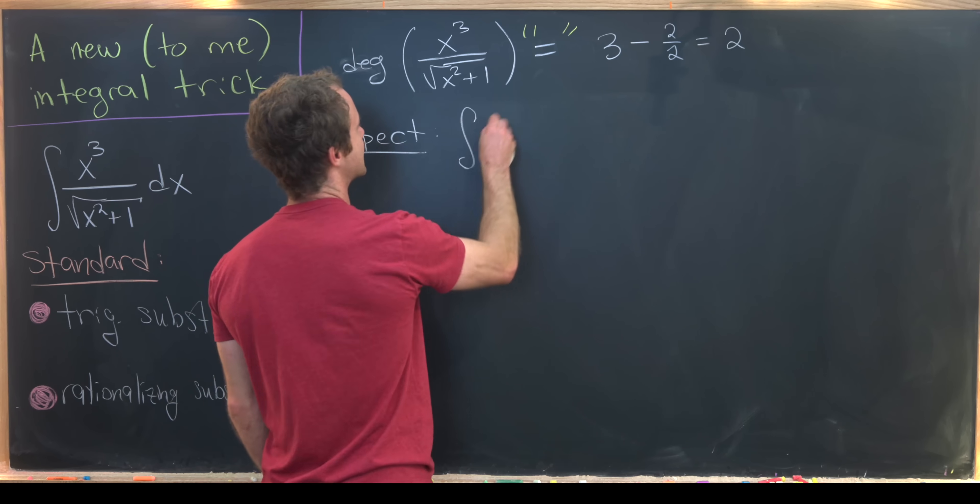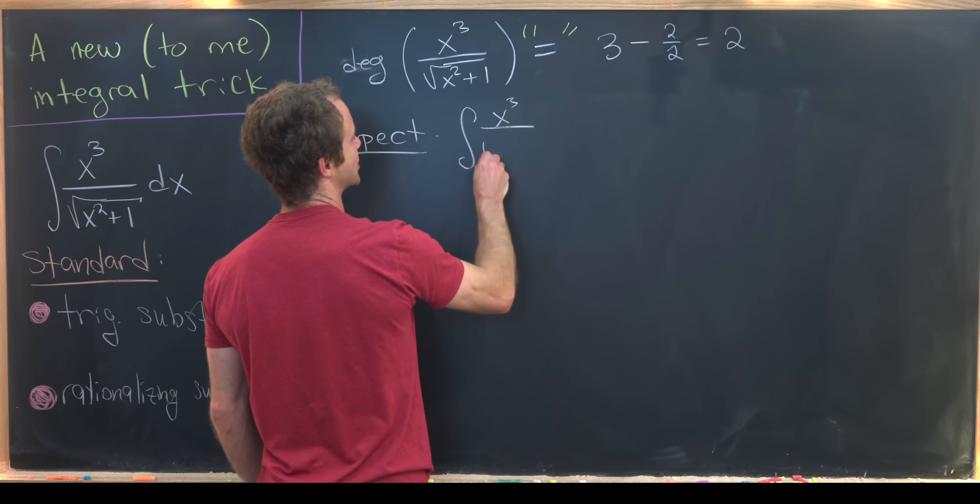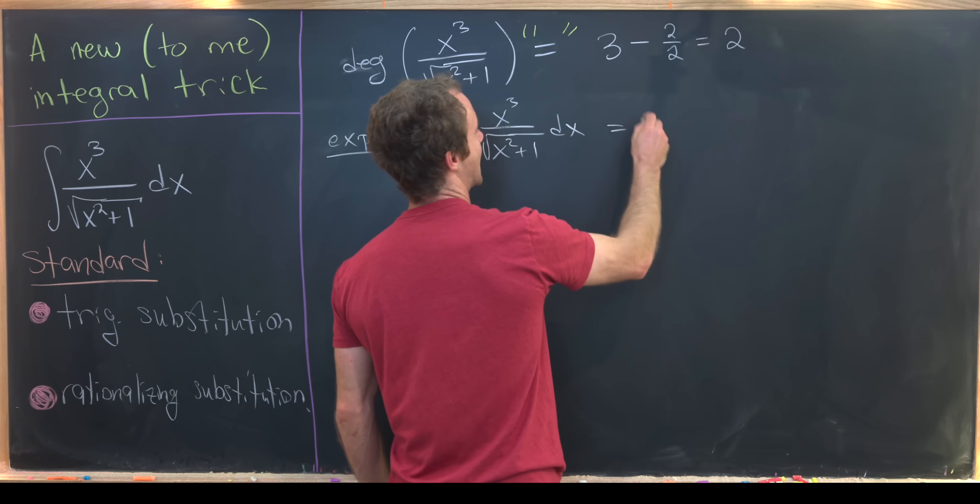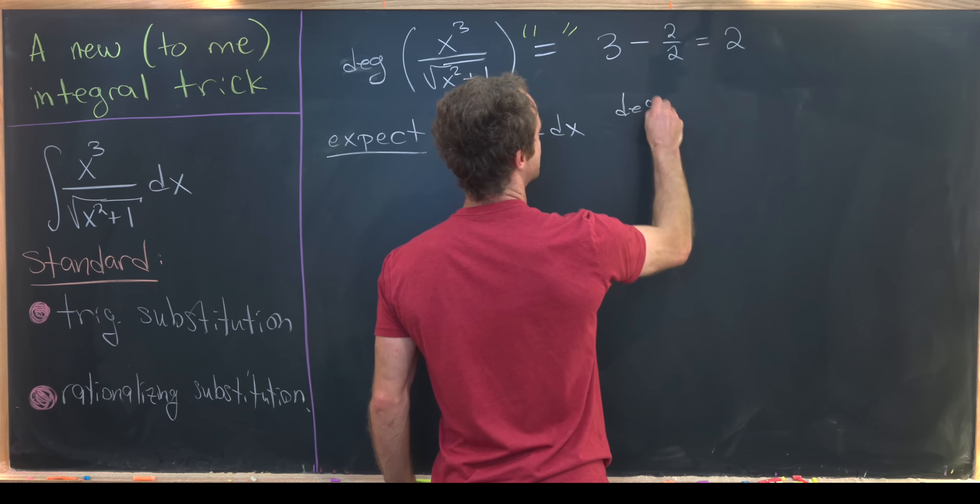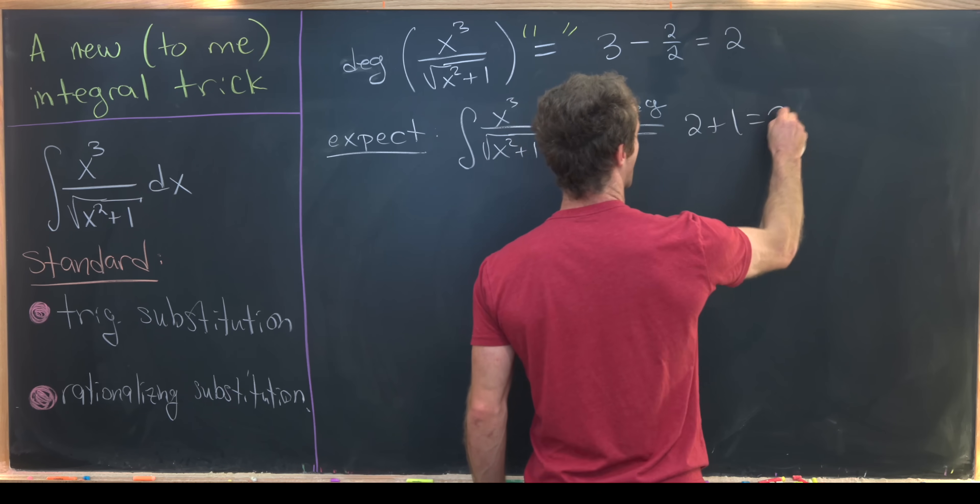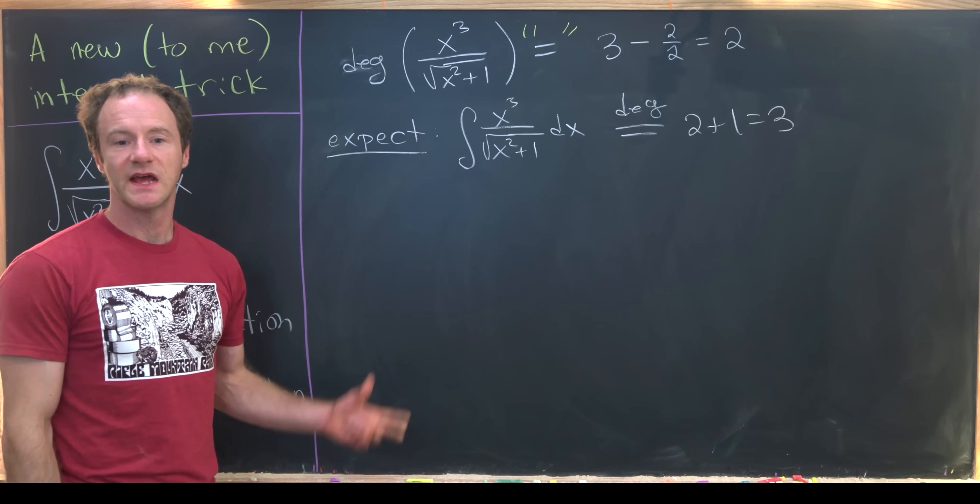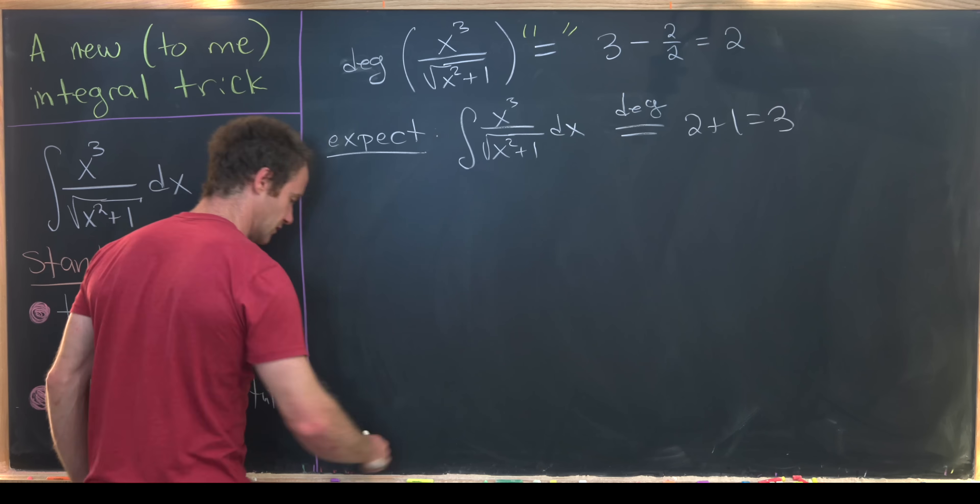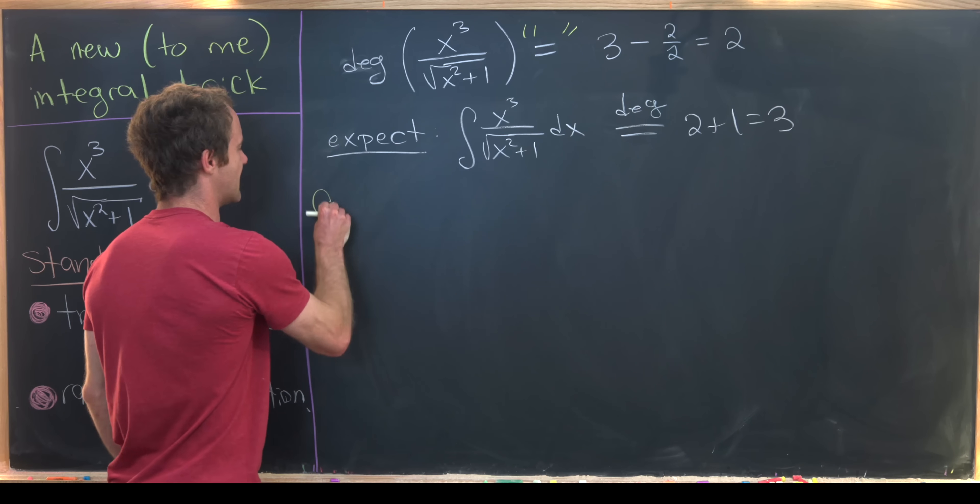We would expect, so I'll write it like this, we'll expect the antiderivative of our object to have degree equal to 2 plus 1 or 3. And so that gives us a nice guess of what our antiderivative looks like. So let's maybe write that down.